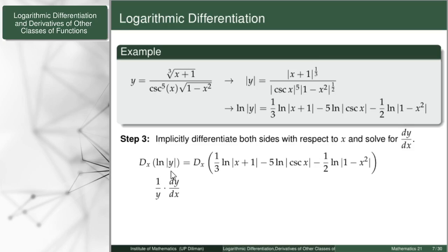In terms of process, it is important to know that you take the absolute value of both sides to maximize the domain. On the right-hand side, instead of having a very long quotient rule and product rule and chain rule, I will differentiate easily as follows. The derivative of the first term will be one-third times the derivative of ln |x+1|, which is 1/(x+1). Of course, I differentiate the argument x+1, which is just 1.